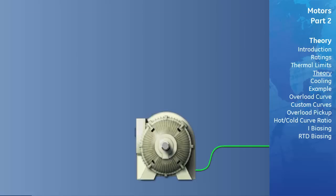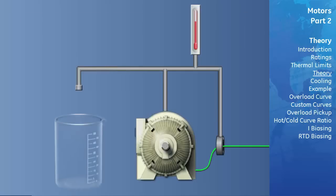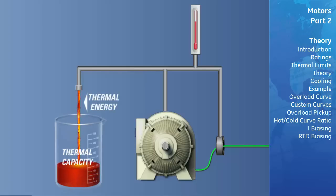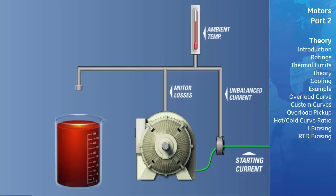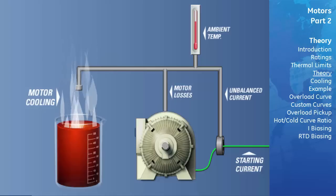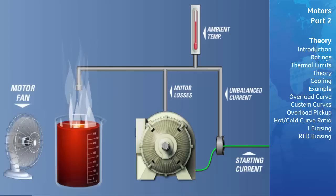We will use a model to aid in understanding motor thermal modeling concepts. The motor's thermal capacity — the amount of heat energy the motor can hold — will be represented by a glass vessel. The lava-like fluid filling the vessel represents thermal energy absorbed by the motor. Sources of thermal energy that fill the vessel include ambient temperature, motor losses due to current unbalances and I-squared-T, and motor heating due to a start. Motor cooling is represented by vapor evaporating from the liquid surface, and a fan represents the additional cooling effect of the motor's cooling system.